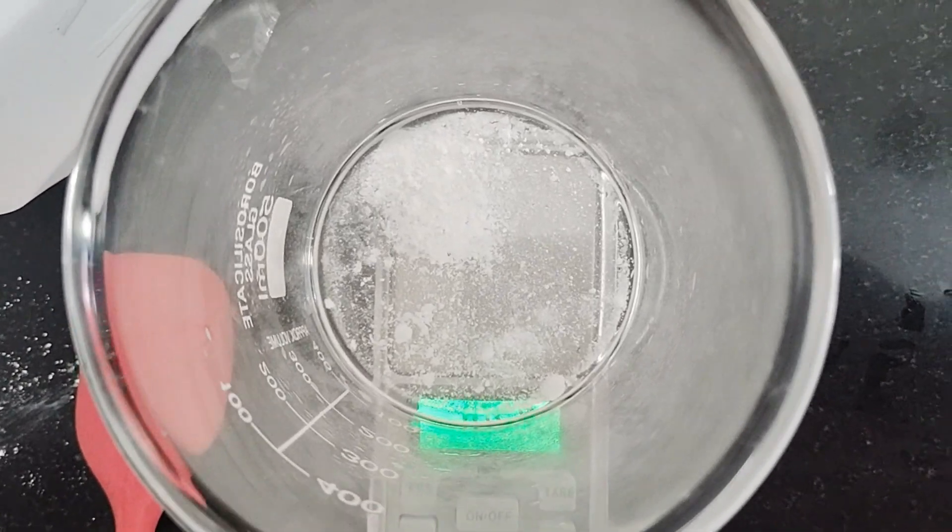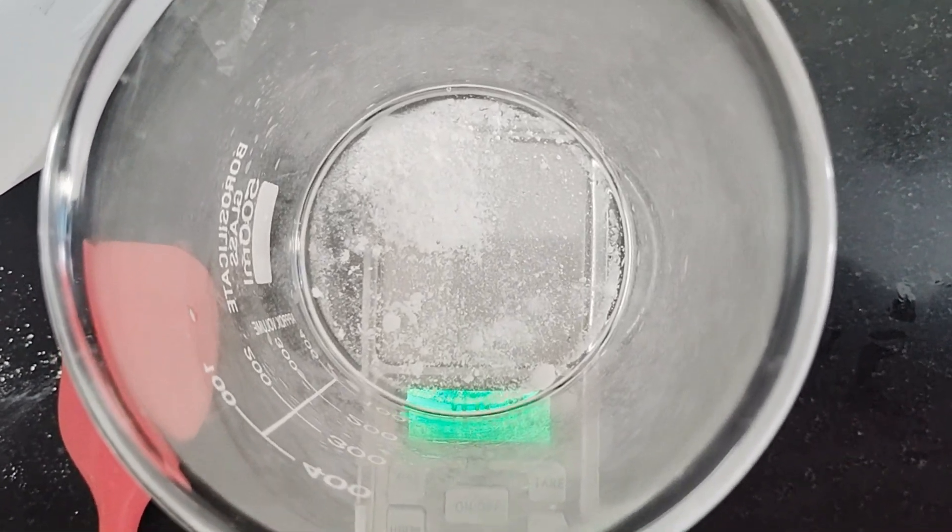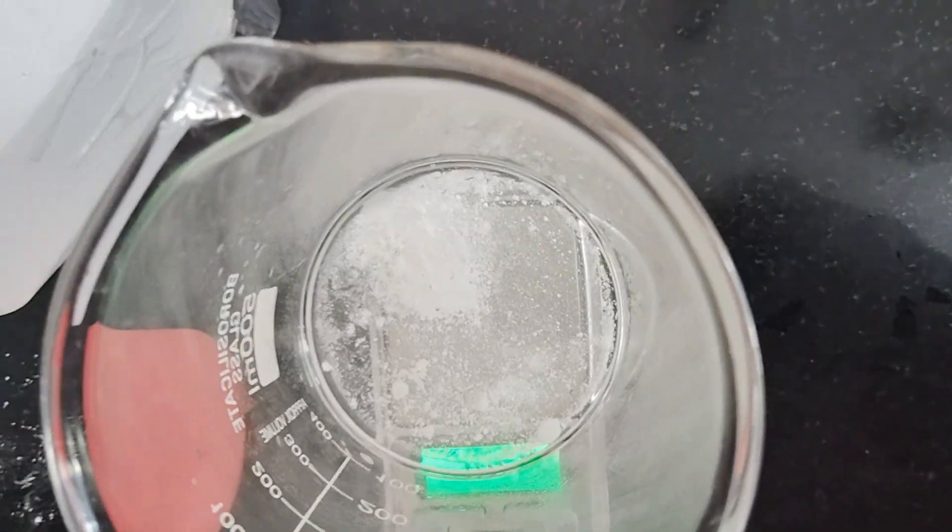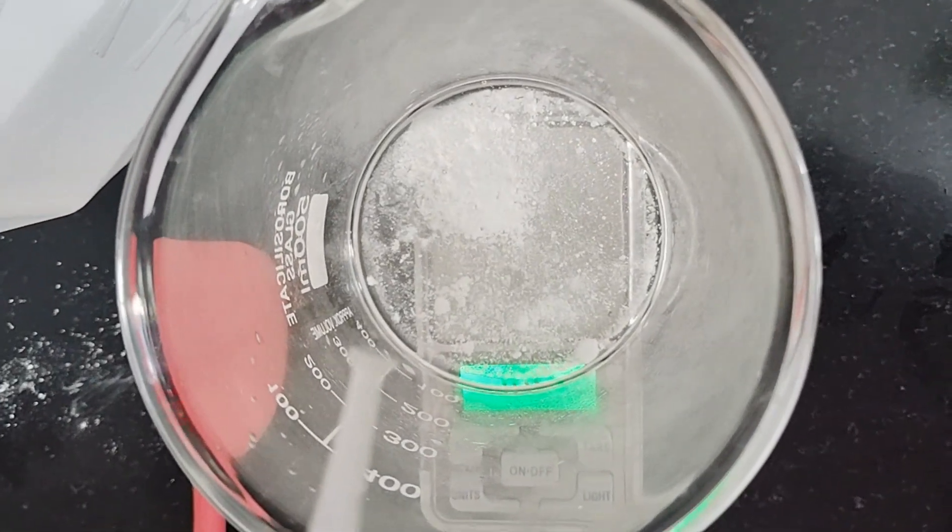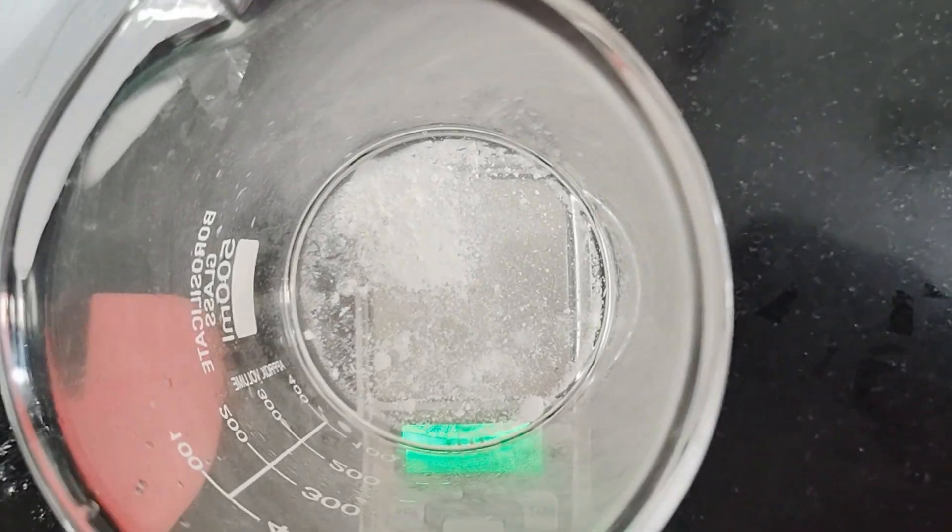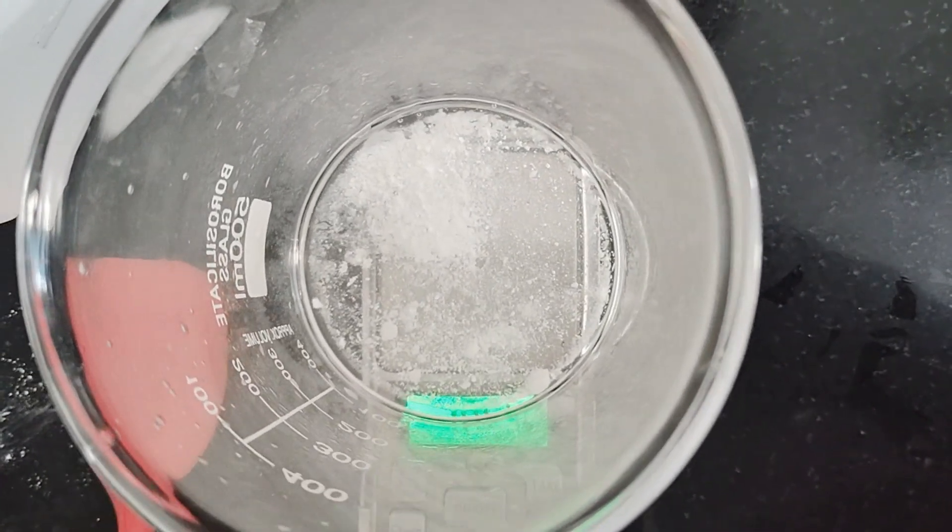Here you can see that I have added all my SPF blend. Now I will be adding ethanol at 40% to dissolve everything, and then I will be adding the rest of my ingredients, including vitamin E. Vitamin E oil acts as an antioxidant.